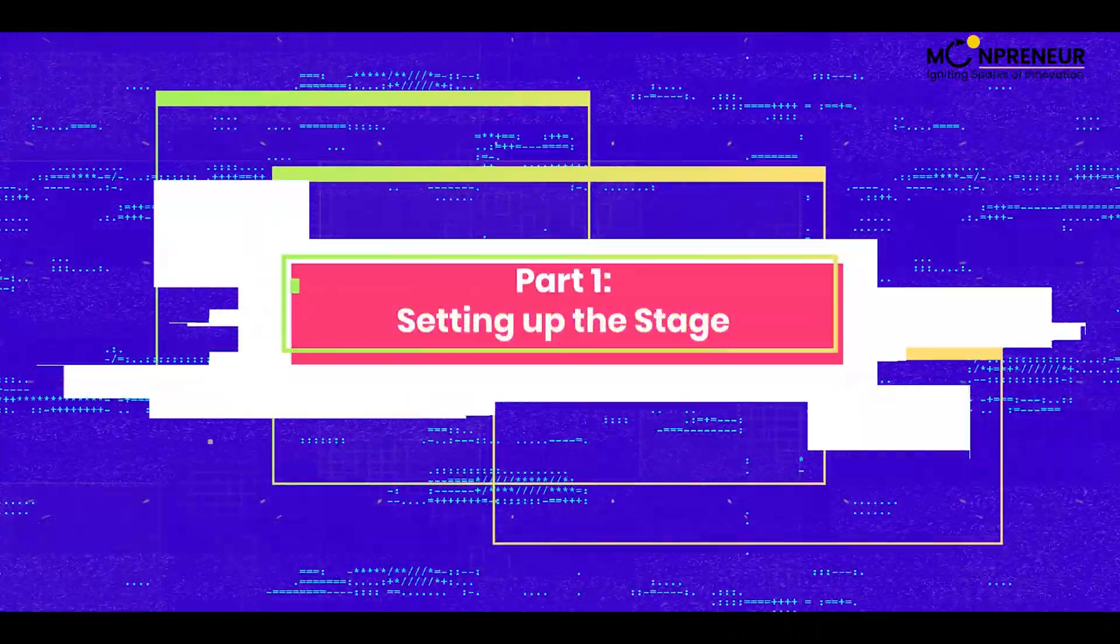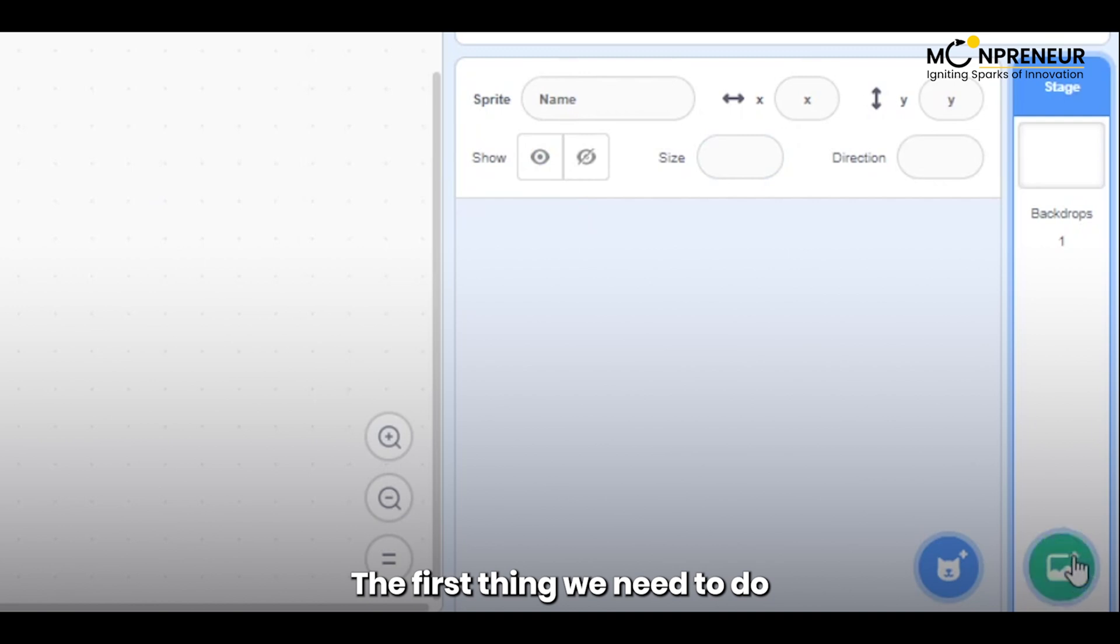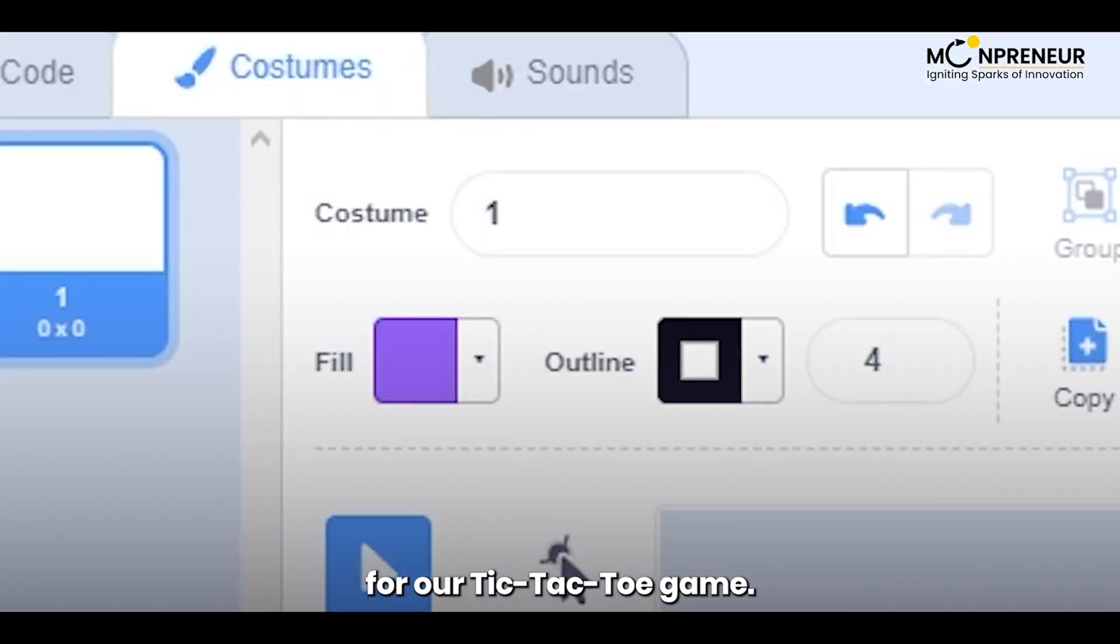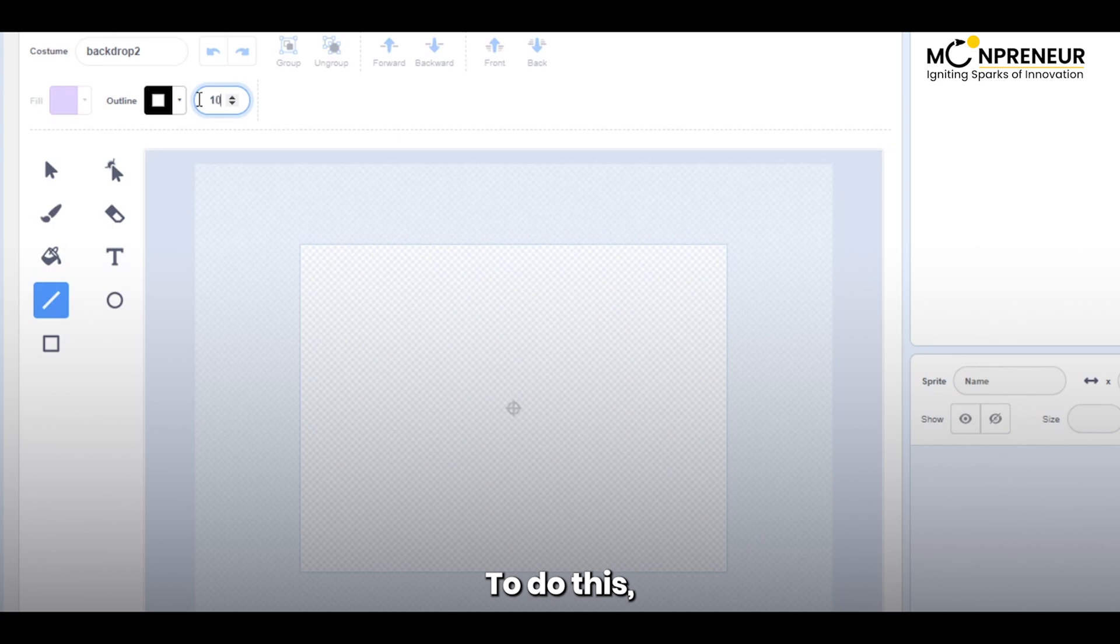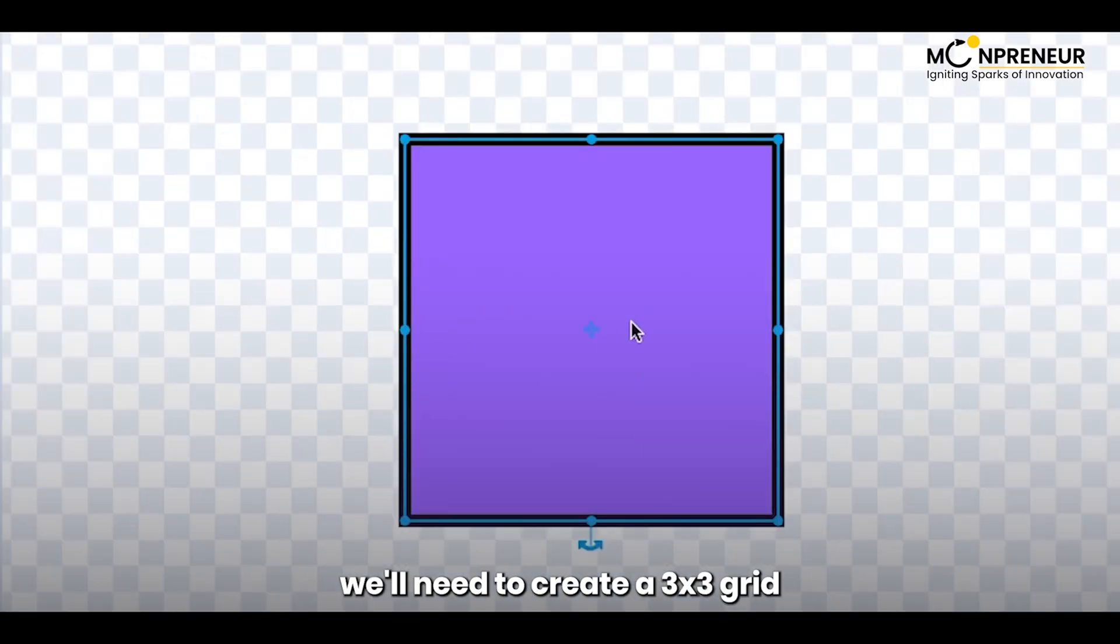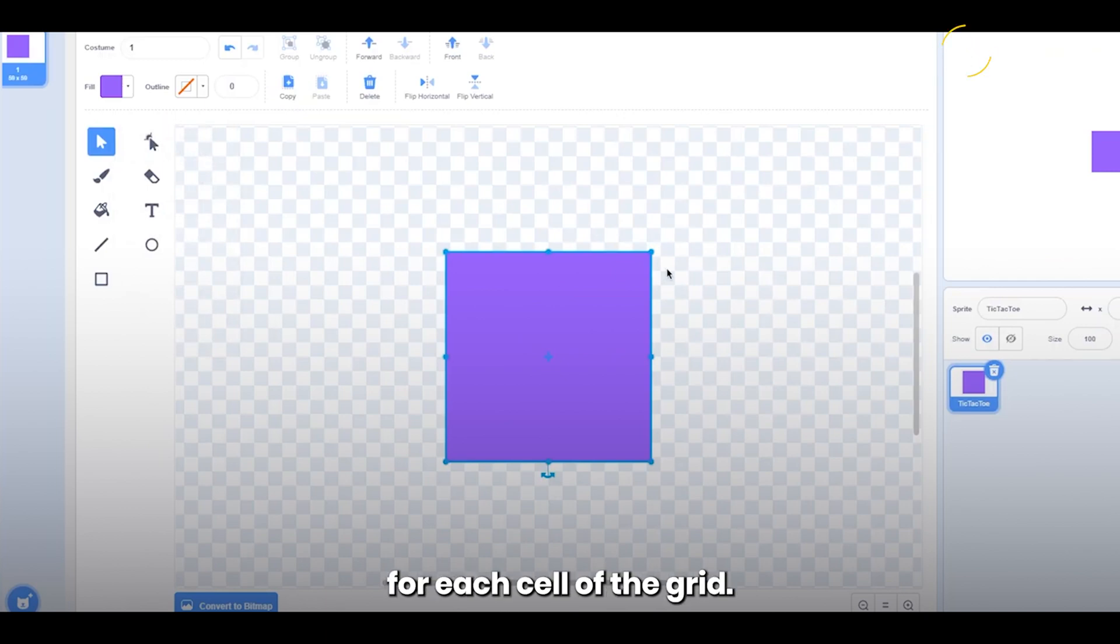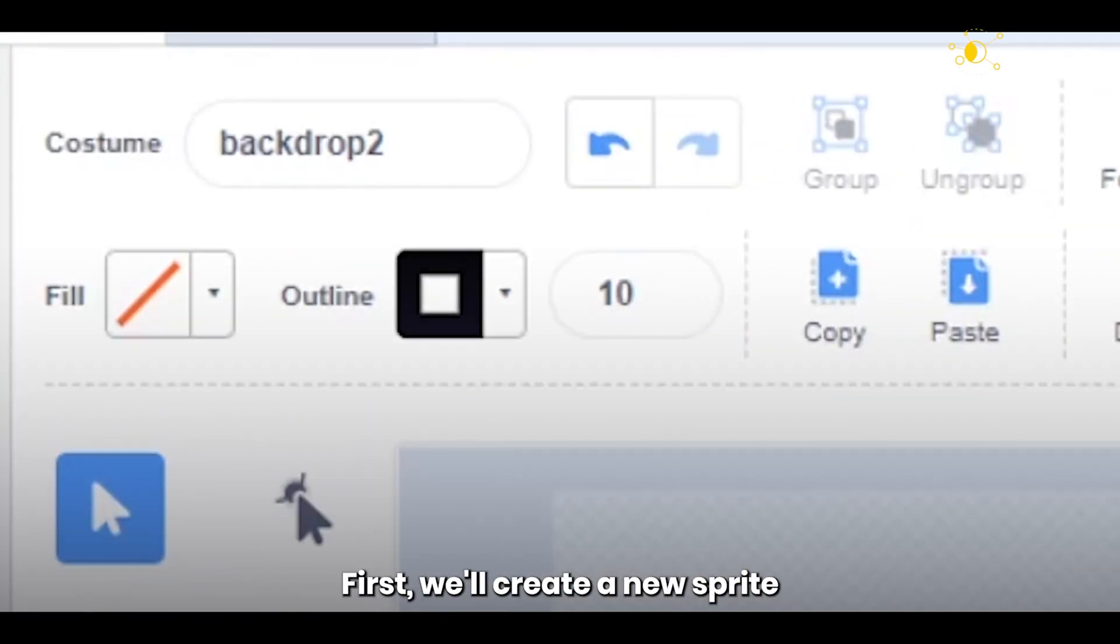Part 1. Setting up the stage. The first thing we need to do is set the stage for our tic-tac-toe game. To do this, we'll need to create a 3x3 grid using sprites. We'll use one sprite for each cell of the grid. First, we'll create a new sprite and name it Grid.